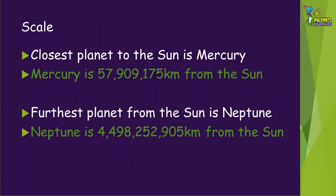The sun is at the centre of our solar system and that's the starting point for all of our measurements. The closest planet to the sun is Mercury, which is almost 58 million kilometres away. The planet that is furthest away is Neptune, which is almost four and a half billion kilometres from the sun.